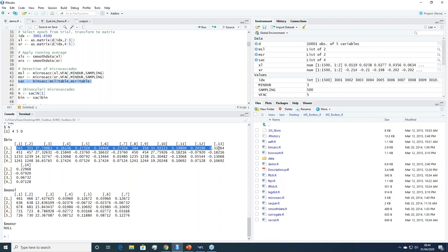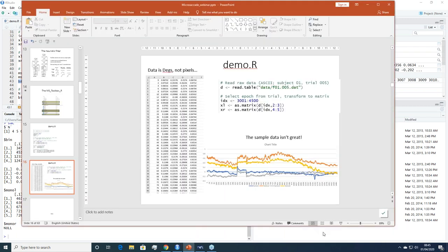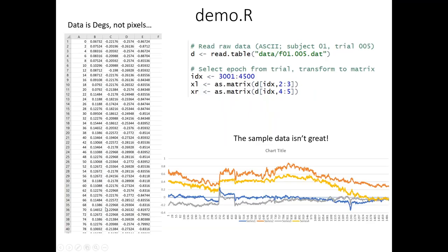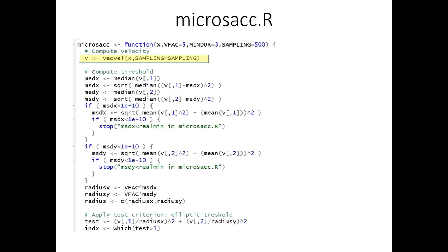What I'm going to show you later is how I've adapted those functions so that they will work on iLink data. One thing it's worth noting about the data that comes with the toolbox is that these are not pixels — the position data is in degrees of visual angle, not pixels. iLink data by default is in pixels. So one of the things we'll do in the adapted version of the toolbox is convert our pixel data into degrees of visual angle, because that's what the code is expecting.